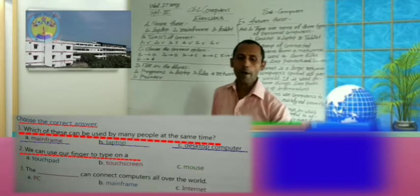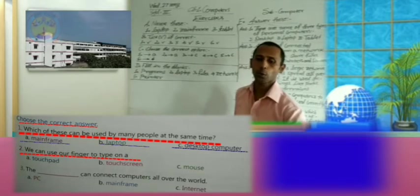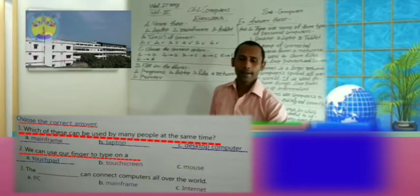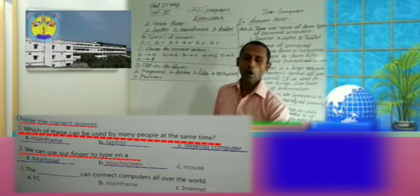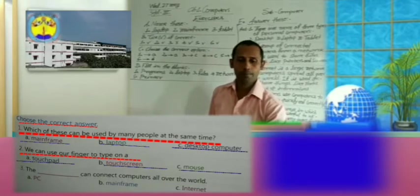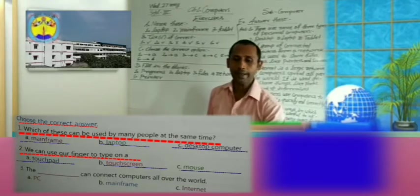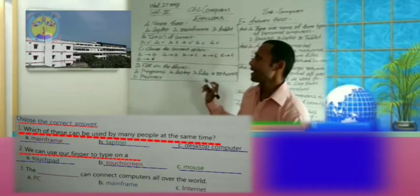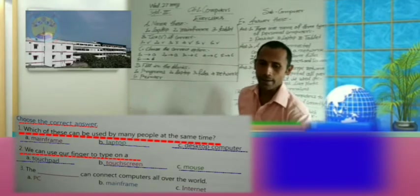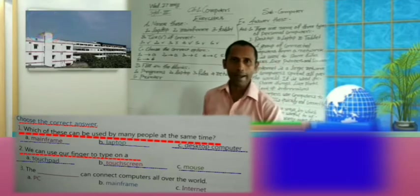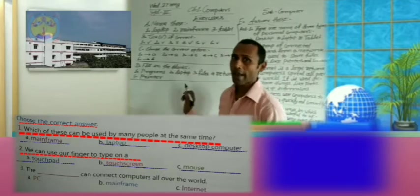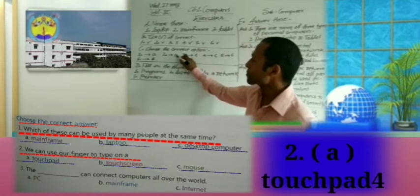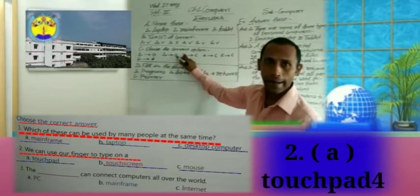Now, second: we can use our fingers to type on a — touchpad, touch screen, or mouse? Think and give the answer. Yes, you are right. Touch screen is the correct option. So, write option A.